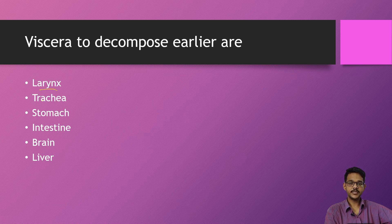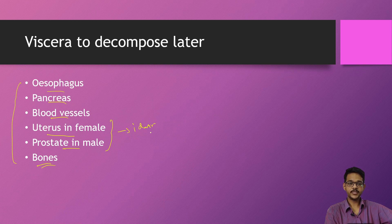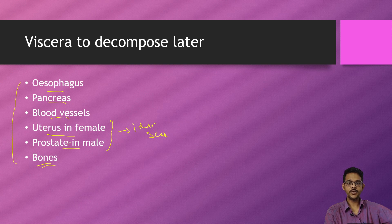Organs which decompose early include the larynx, trachea, stomach, intestines, brain, and liver. Organs which decompose later include the esophagus, pancreas, blood vessels, uterus in females, prostate in males, and last of all, the bones. This is important for identification purposes: if the uterus is present, it indicates female; if it is absent, it may indicate male. Since decomposition causes loss of skin and external features, presence of these organs helps identify sex.